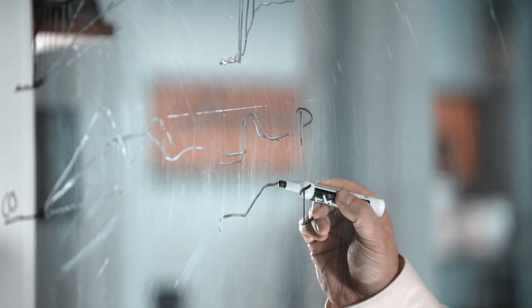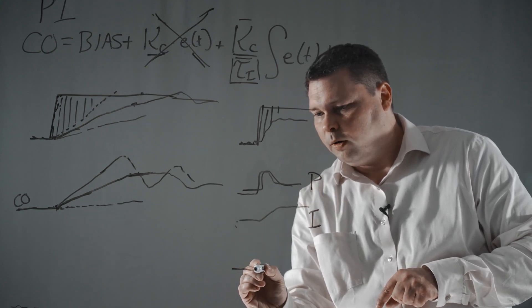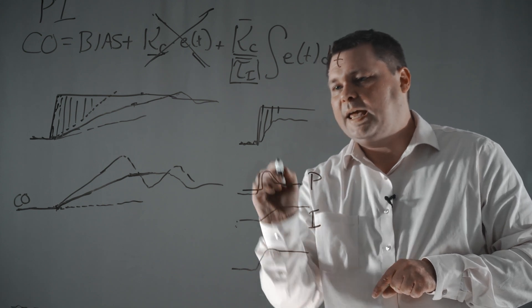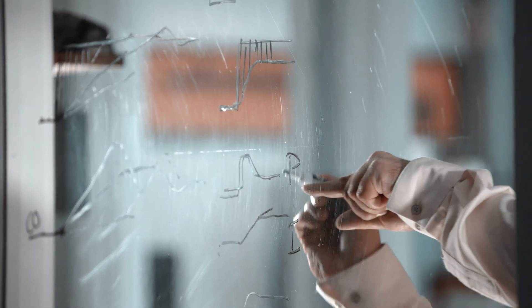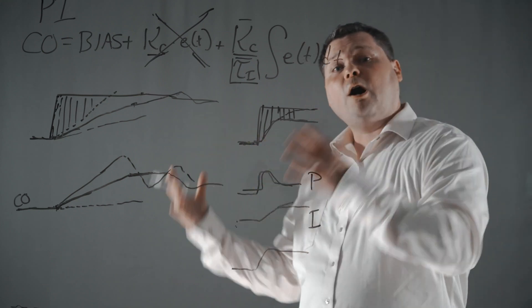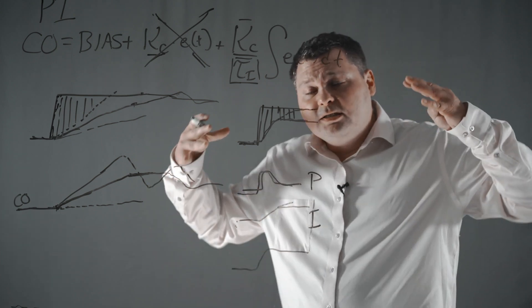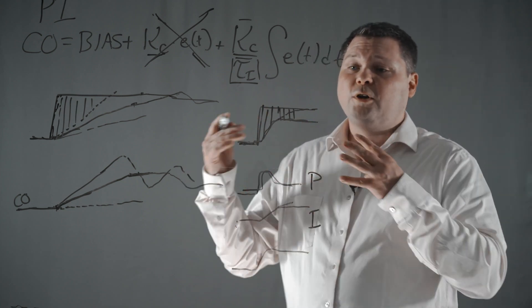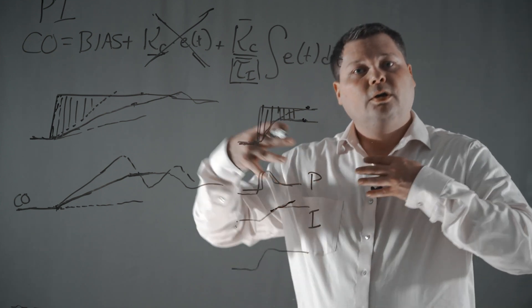When you put those two terms together, you allow the controller output to go up and then steady at a new value. Instead of your process variable having an offset because this error exists, that error is actually driving your integral to keep moving, and it's going to move that process variable up to the set point. So the integral removes the offset that was caused by a P-only controller. The integral is accumulating, building up its momentum, and it's going to continue to accumulate as long as there's error.